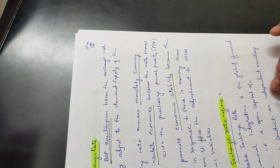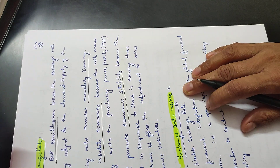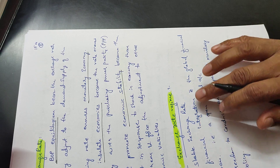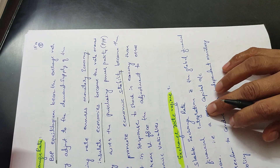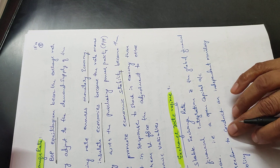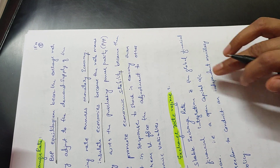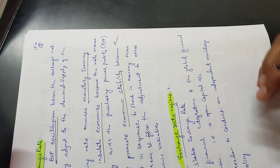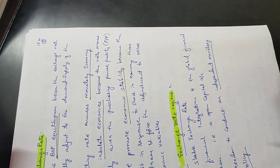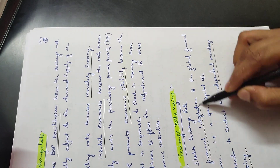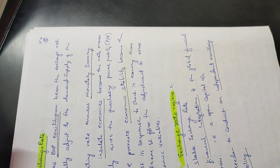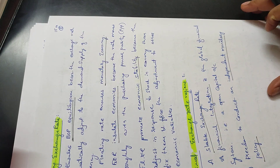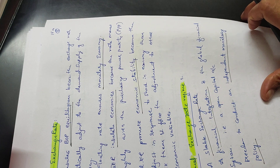The optimal exchange rate regime consists of: a stable exchange rate, financial integration with the global financial system through an open capital account, and the freedom to conduct an independent monetary policy. These three together define the optimal exchange rate regime.